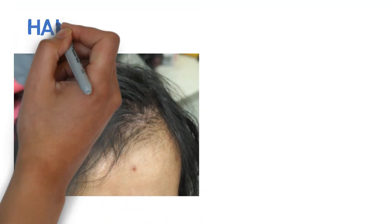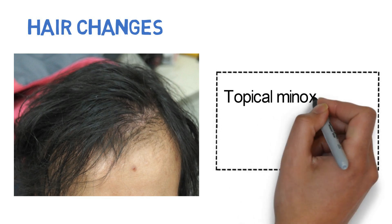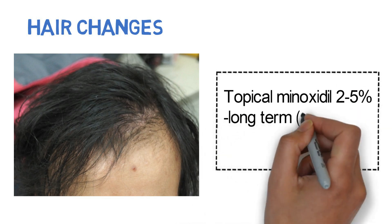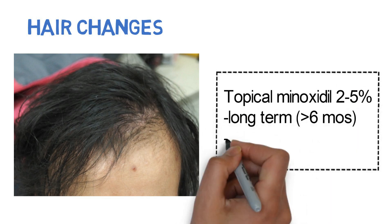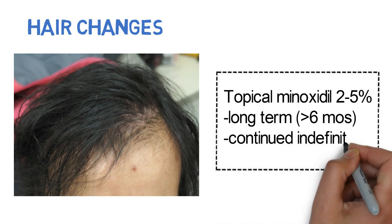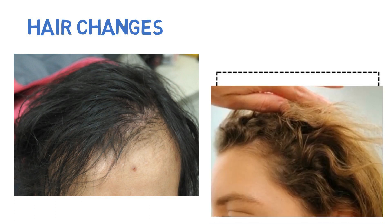Non-scarring alopecia can be treated with topical minoxidil 2-5%. Long-term treatment, usually for 6 months or more, is required to observe any improvement. Treatments must be continued indefinitely to maintain these improvements. Other changes seen in the hair with BRAF inhibitors include curling of the hair.